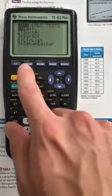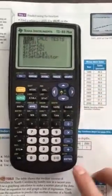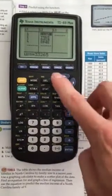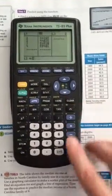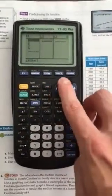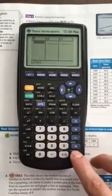So we're going to press STAT and then have it be on edit, enter. If you need to clear these lists, you can go up here and press clear and then enter, over here clear and enter.